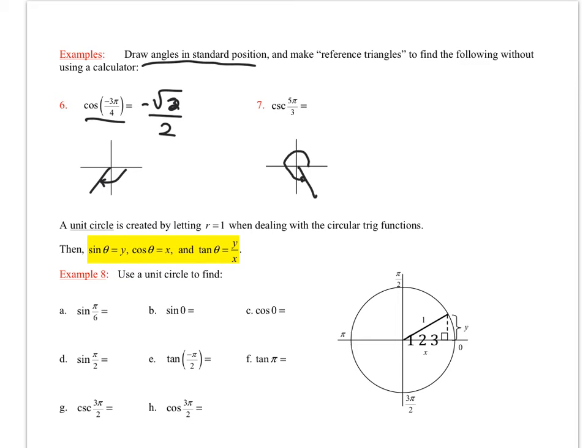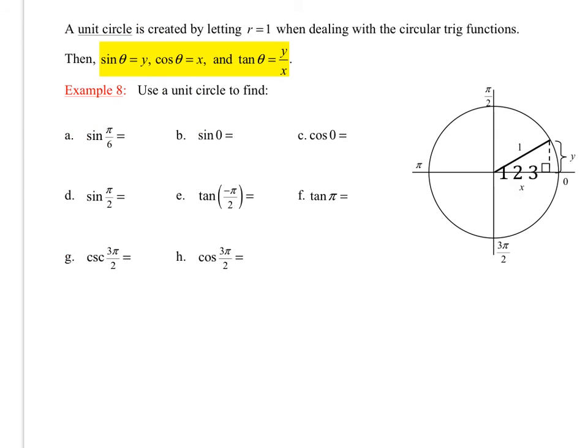Cosecant is the reciprocal of the sine. So this is 1 over the sine of 5π over 3. Sine of 5π over 3 is negative square root of 3 over 2. That would be my y coordinate. So I have 1 over negative square root of 3 over 2, which turns out to be negative 2 over the square root of 3. Once again, rationalize if your teacher asks. Or make sure you can recognize that as 2 square root of 3 over 3.